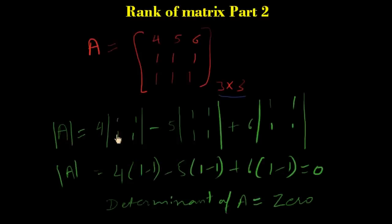So determinant of A, we will calculate by four, this sub-matrix minus five. Leave this column and leave this row and take these elements and then plus six, leave this row and this column and take sub-matrix and calculate its determinant. One into one minus one into one.